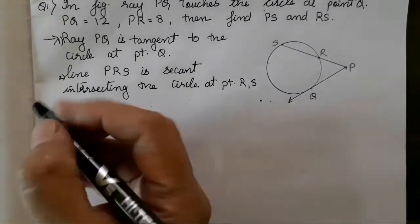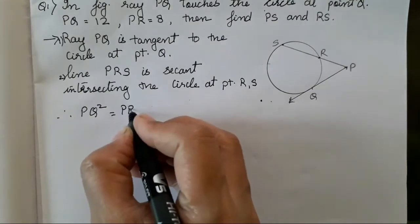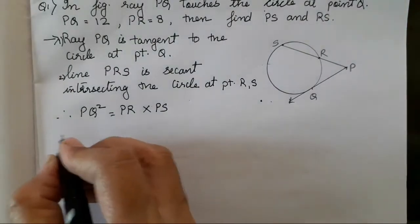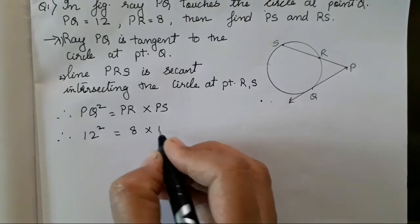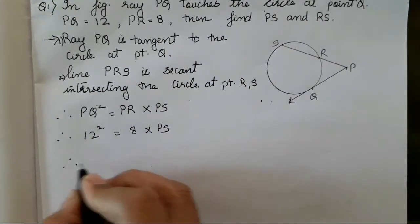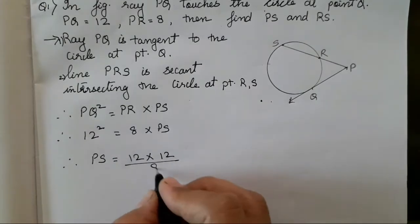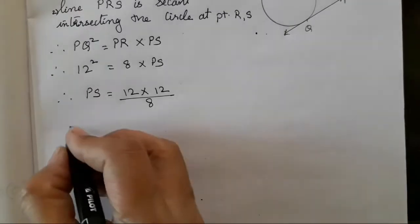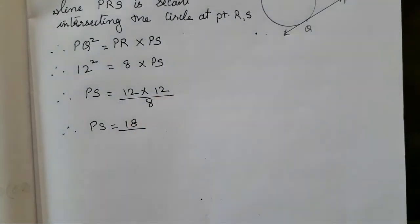So after writing this, we have to use the tangent-secant segment theorem. Directly apply it and substitute its value. 12 squared is equal to 8 into PS. Therefore, PS is equal to 12 × 12 upon 8, which reduces to PS is equal to 18.